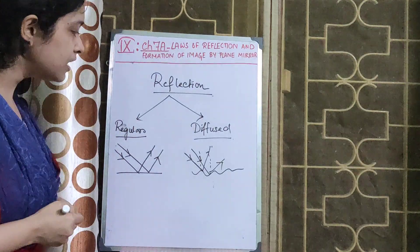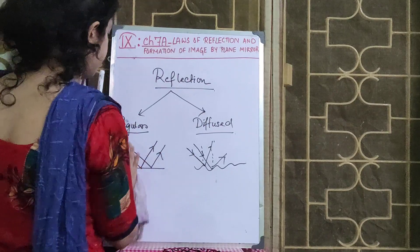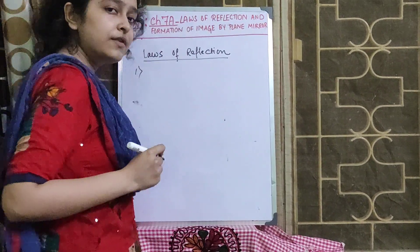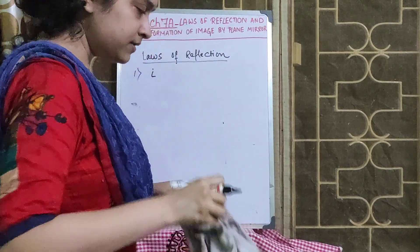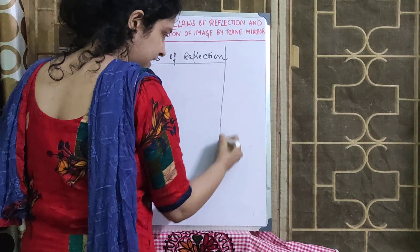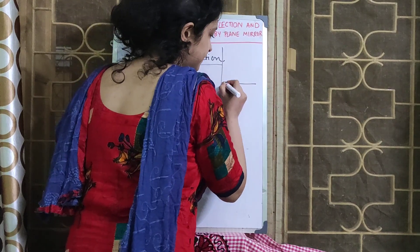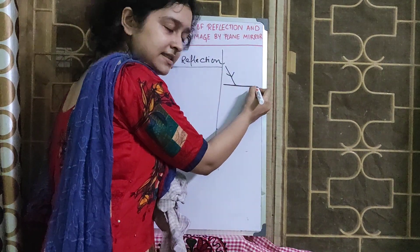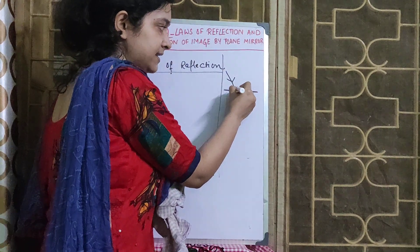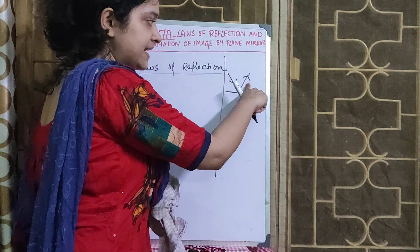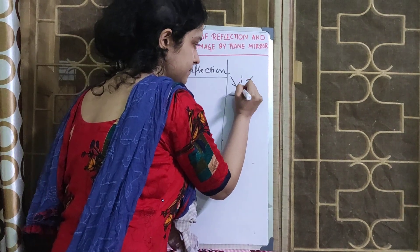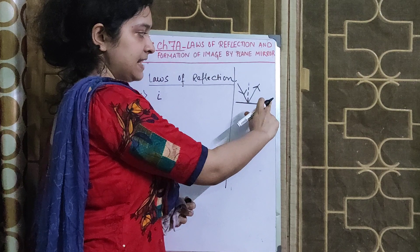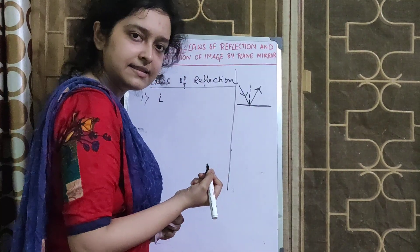Now, what are the laws of reflection? There are two laws. Before stating them, let's draw a diagram of the different parts of reflection of light. This is the surface on which light is falling — the reflecting surface. When the light falls and strikes this surface, it gets reflected back to the same medium. The imaginary line drawn perpendicular to the reflecting surface at the point of incidence is the normal. This is the point of incidence.